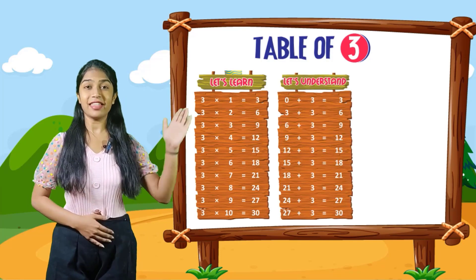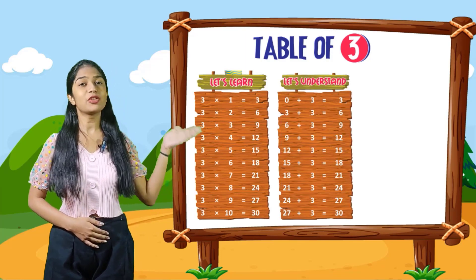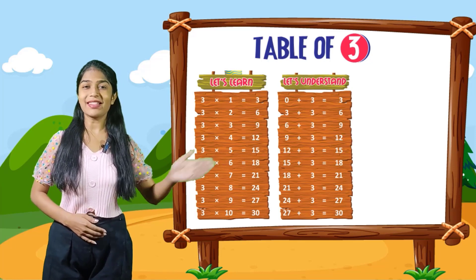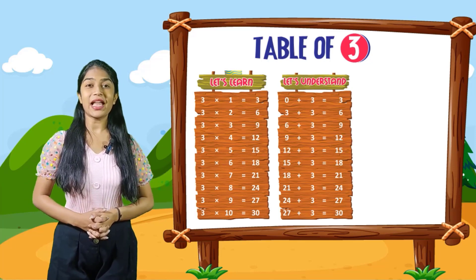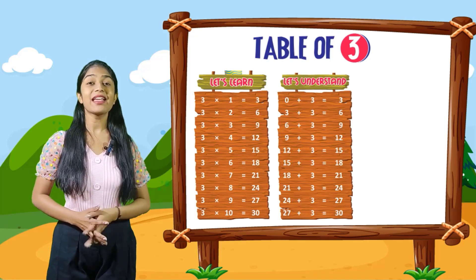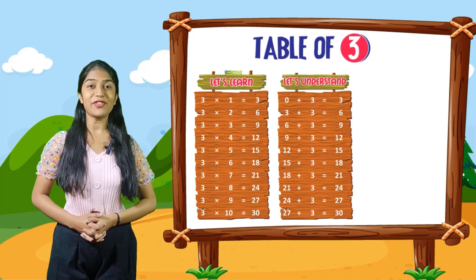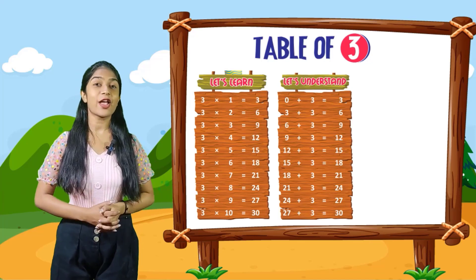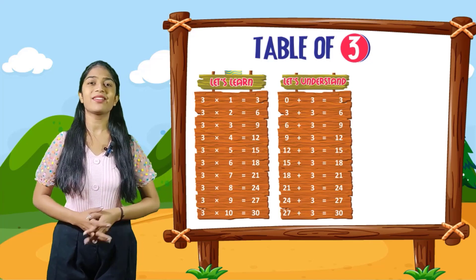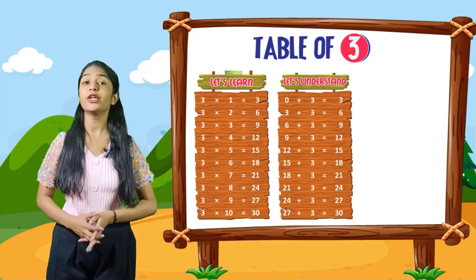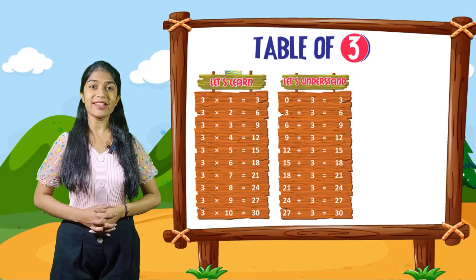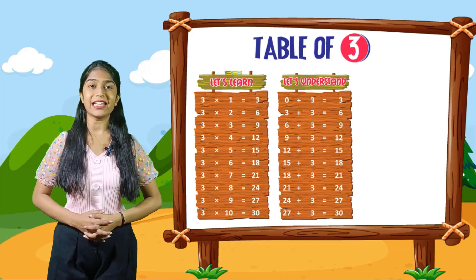Now let's understand. 0 plus 3 is equal to 3. 3 plus 3 is equal to 6. 6 plus 3 is equal to 9. 9 plus 3 is equal to 12. 12 plus 3 is equal to 15. 15 plus 3 is equal to 18. 18 plus 3 is equal to 21. 21 plus 3 is equal to 24. 24 plus 3 is equal to 27. 27 plus 3 is equal to 30.